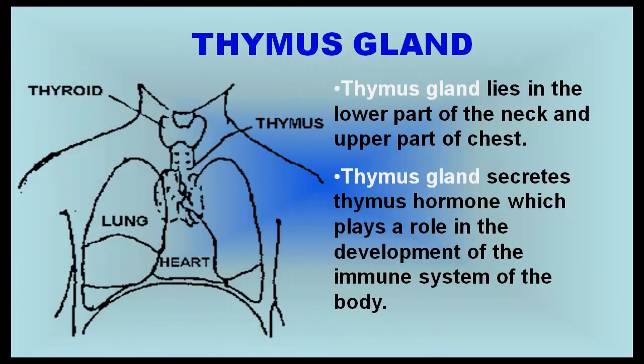The thymus gland lies in the lower part of the neck and upper part of the chest. It secretes thymus hormone, which plays a role in the development of the immune system of the body.